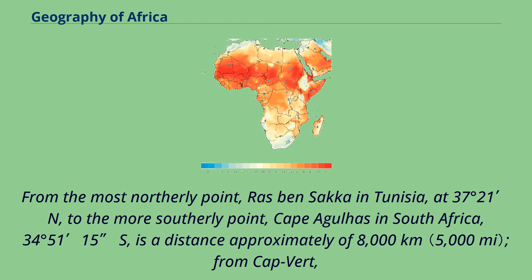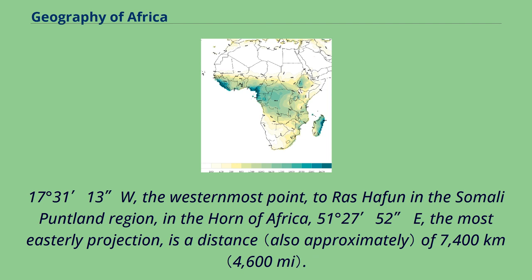From the most northerly point, Ras Ben Sakka in Tunisia, at 37 degrees 21 N, to the most southerly point, Cape Agulhas in South Africa, 34 degrees 51 minutes 15 seconds S, is a distance of approximately 8,000 kilometers. From Cape Verde, 17 degrees 31 13 W, the westernmost point, to Ras Hafun in the Somali Puntland region in the Horn of Africa, 51 degrees 27 minutes 52 seconds E, the most easterly projection, is a distance of 7,400 kilometers.